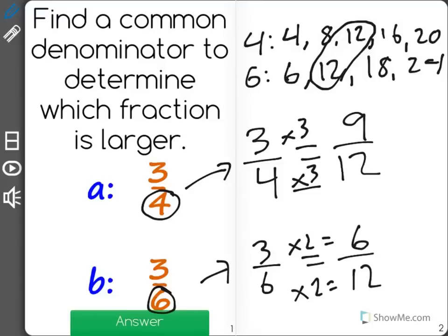Now, you can see 3 fourths is equal to 9 twelfths, and 3 sixths is equal to 6 twelfths. Well, I know that if I have 9 out of 12, that is greater than 6 out of 12, so A, 3 out of 4, is the larger fraction.